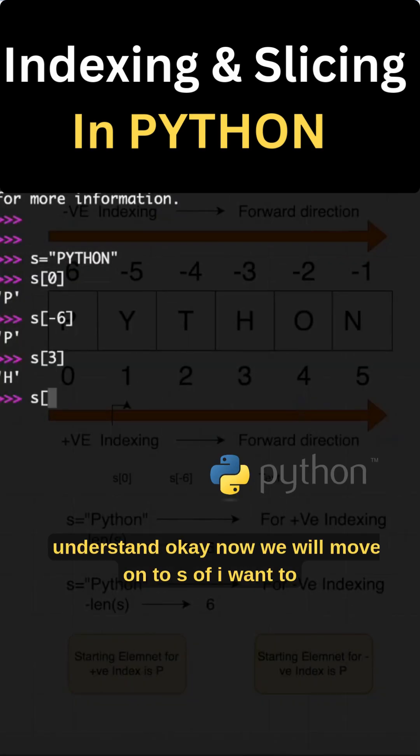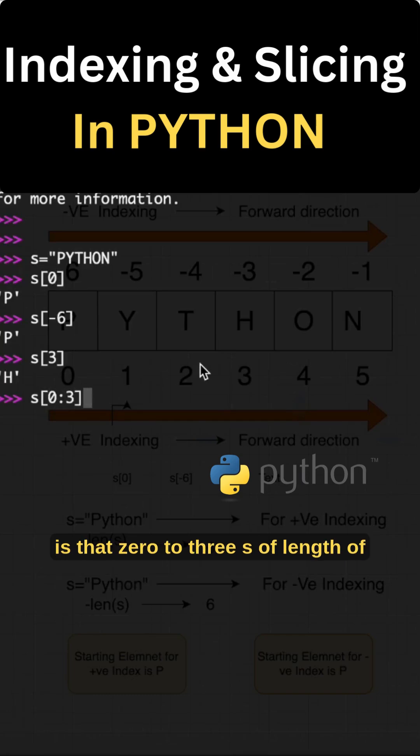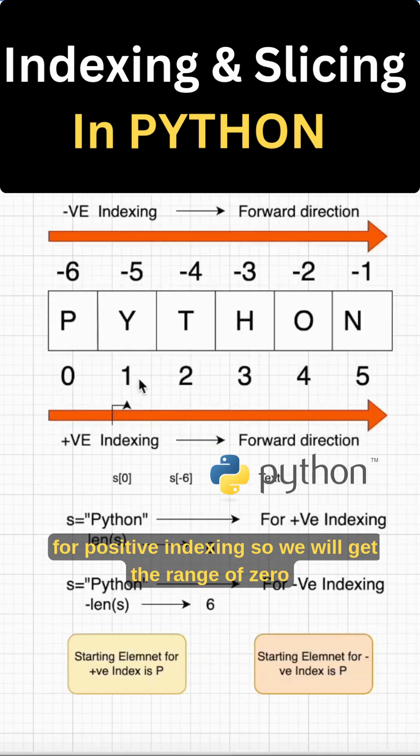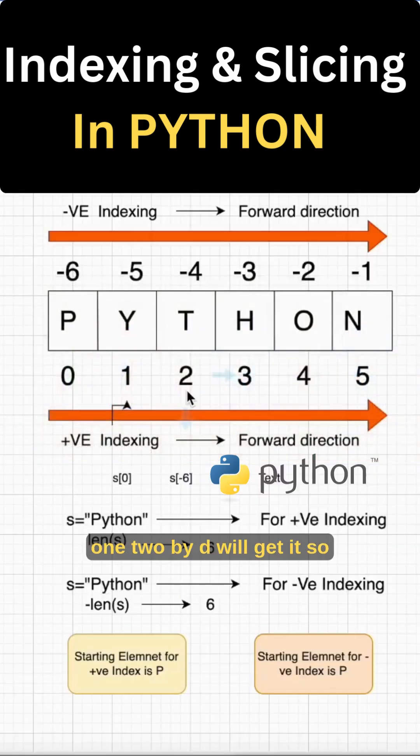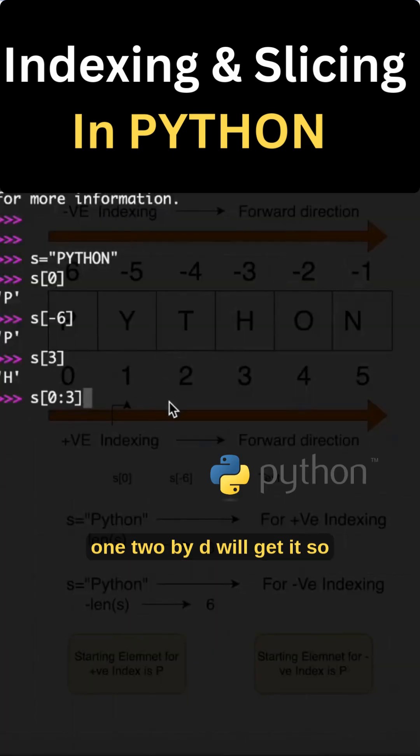Now we will move on to, I want to get the range of values. So suppose 0 to 3. What is that 0 to 3? S of length of 0 to 3 plus 1, I mean minus 1 for positive indexing. So we will get the range of 0, 1, 2: P, Y, T. We will get it.